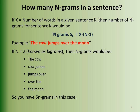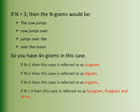How many N-grams are in a sentence? The formula is X minus N plus 1, where X is the number of words in a sentence and N is the order of the N-gram. For example, in the sentence 'the cow jumps over the moon' with N equal to 2, the value is 6 minus 2 plus 1, giving 5 N-grams. When N is 3, we get 4 N-grams. If the value of N is above 3, we call them 4-grams, 5-grams, and so on.